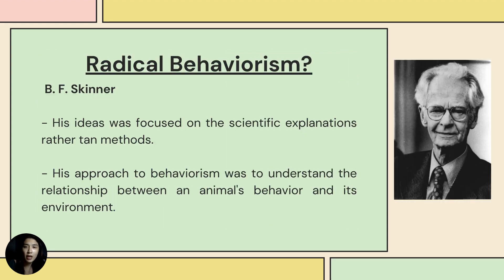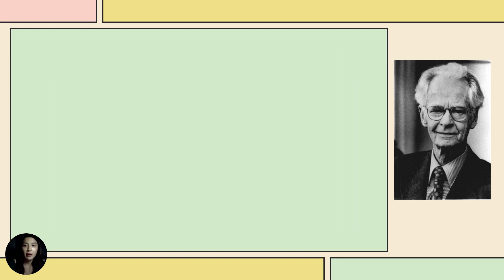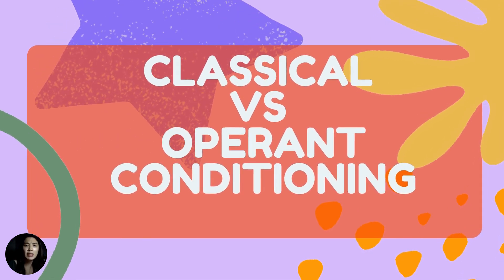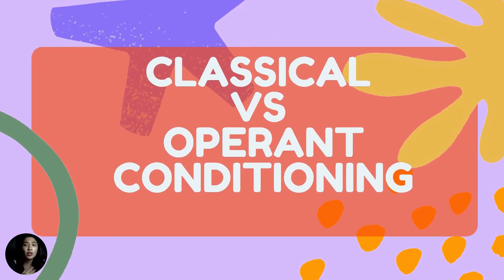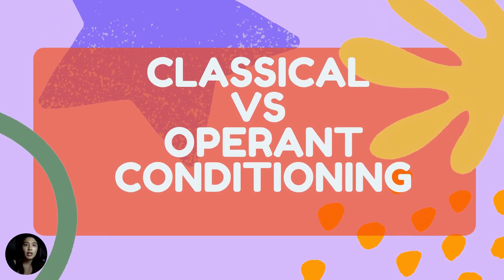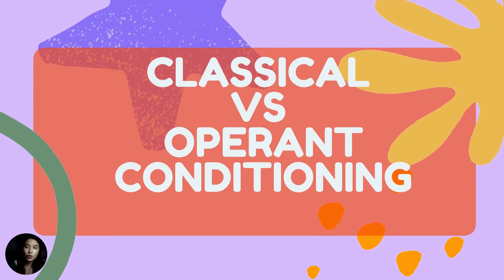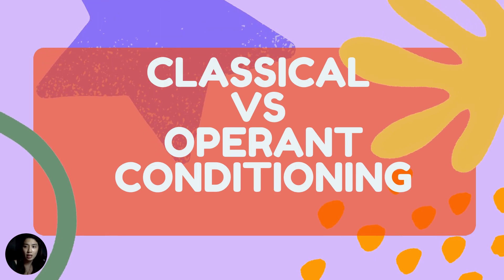For radical behaviorism, the pioneer is B.F. Skinner. His ideas were focused on scientific explanation rather than methods. His approach to behaviorism was to understand the relationship between an animal's behavior and its environment. Behaviorists believe humans learn behaviors through conditioning, which associates behaviors with the environment, like sounds or how they respond to sounds they hear.